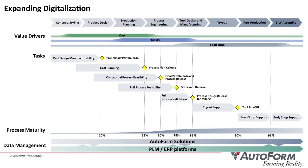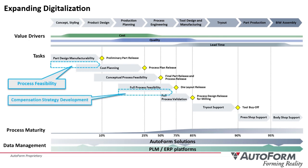We've identified four main tasks that comprise the body-in-white assembly process chain. Process feasibility allows for early study of the assembly process, truly seeing the effects of assembly on nominal part geometries. Compensation strategy development, part of process engineering, ensures you are making the right parts to yield the best assembly.